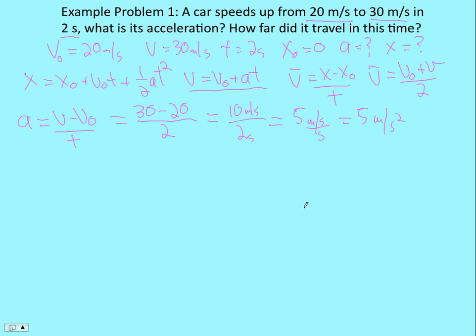How about our next question, how far did it go? Now that I know the acceleration, I could use this equation here. That's not a bad idea and it's already solved for my unknown. So I started at 0, my initial velocity is 20, the time was 2, plus one-half, now I know the acceleration, times the time squared. And so that comes out to be a distance of 50 meters.